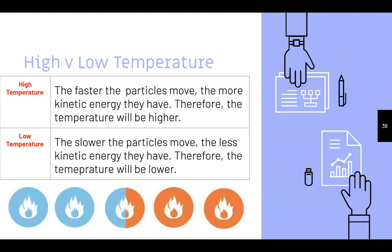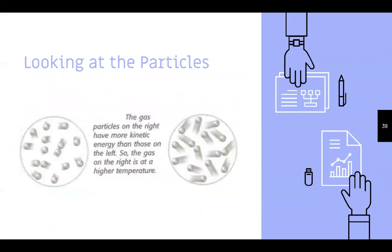Therefore the temperature will be higher. If something's fast-moving and the particles are chaotic, they'll have more kinetic energy and a higher temperature. The opposite is true: the slower the particles move, the less kinetic energy they have, and the temperature will be lower. Looking at the particles: the gas particles on the right have more kinetic energy than those on the left, so the gas on the right is at a higher temperature — you can barely see them moving, they're so fast, while the left ones are much slower.